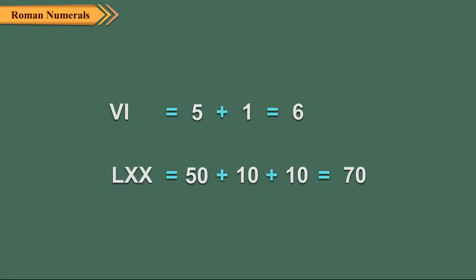In LXX, L of 50 is followed by XX or 20. So, its value is 50 plus 10 plus 10 which is equal to 70.